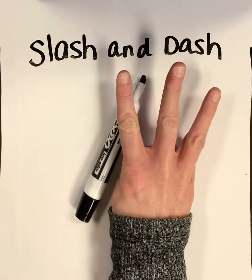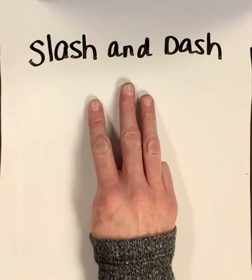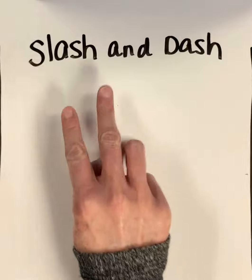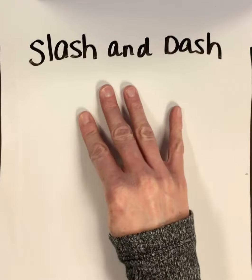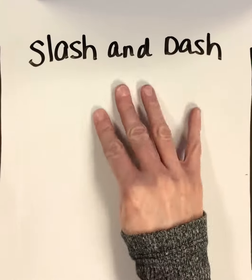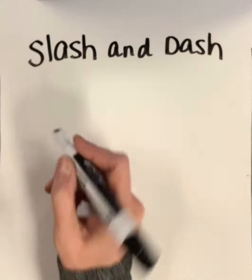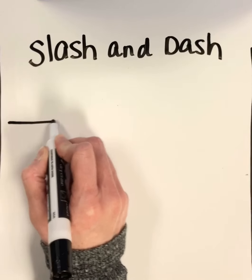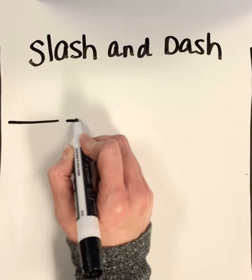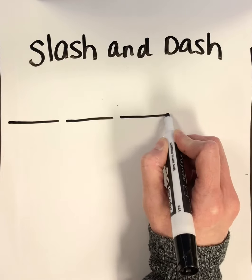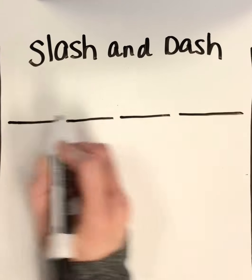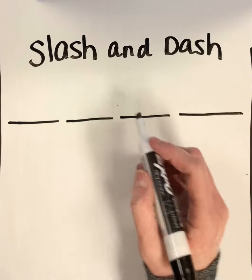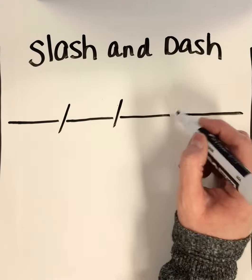So I'm first going to do my syllables. I'm going to think about how many syllables are in circulation. Circulation. Circulation. All right, so I'm going to do my four lines here. Circulation. Circulation. All right, so those are my sounds or my syllables.